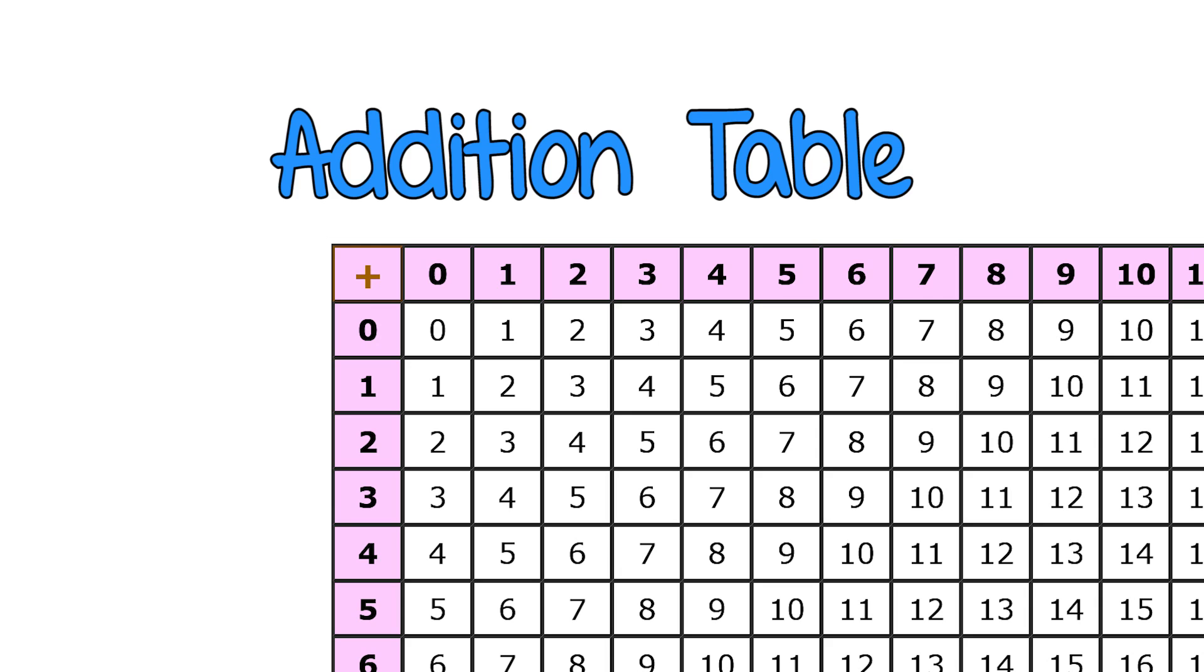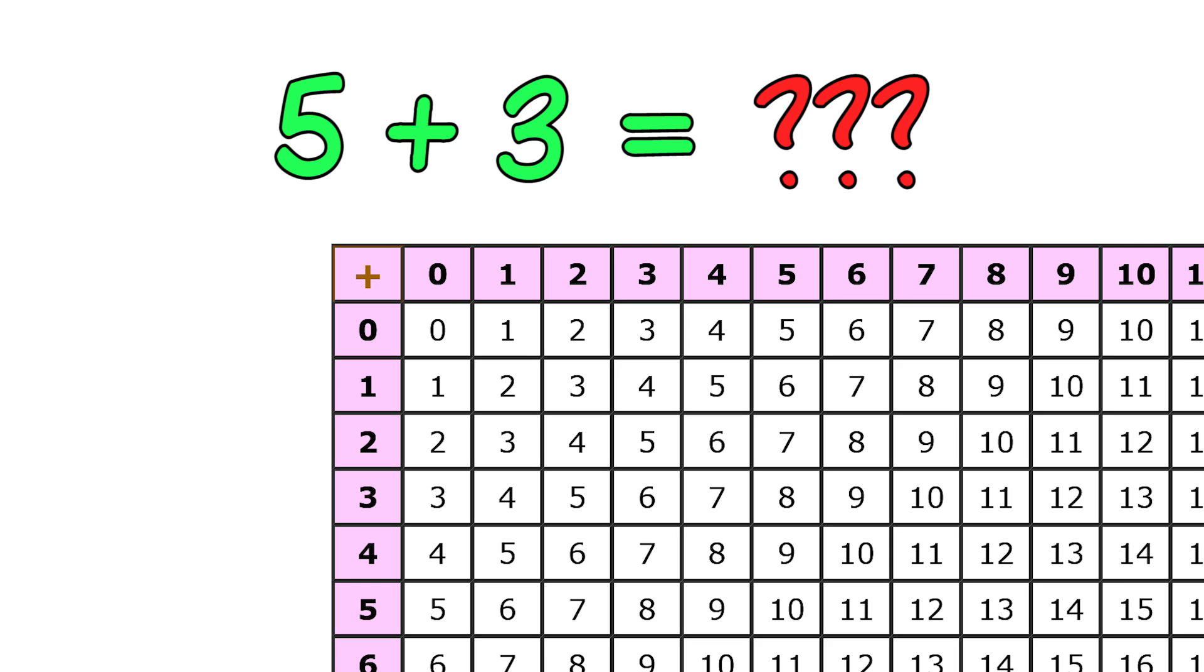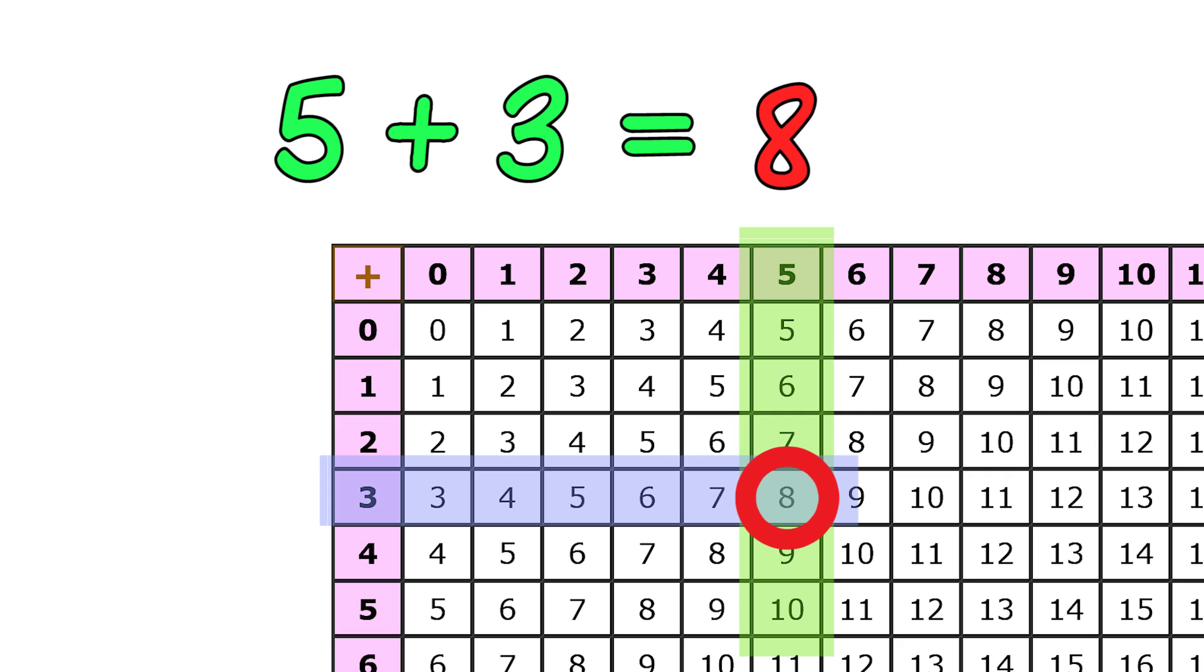We can use an addition table to help us find the answers to simple sums. Let's find the answer to five plus three. First, find the number five along the top row. Then find the number three in the left-hand column. Now, find where they meet. The answer is eight. Five plus three equals eight.